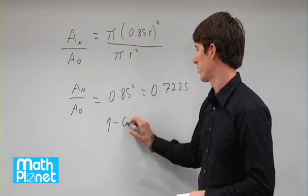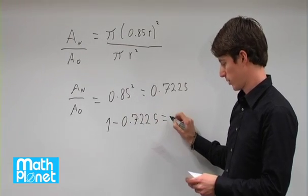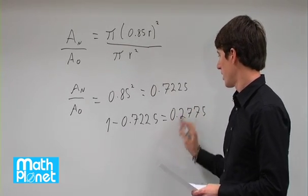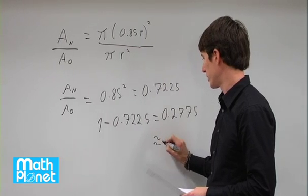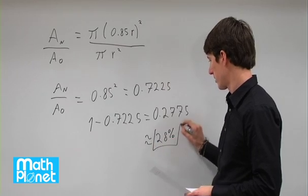1 minus 0.7225 is equal to 0.2775. So that's about equal to 28%. So there's our final answer, 28%.